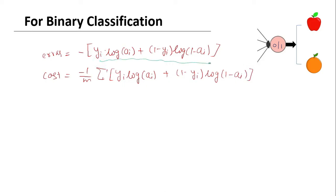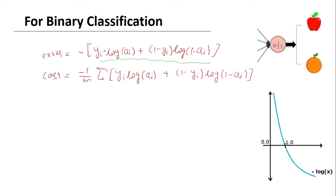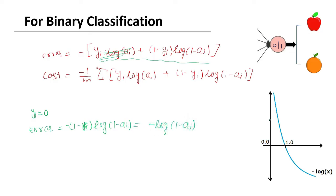Let's look at how this term can represent the error for one observation. The graph of the negative logarithm looks something like this. When the output label yi equals 0, the first term is cancelled, and we are only left with minus of log(1 minus ai). If ai approaches 0, then 1 minus ai approaches 1, and the log value is around 0, so the error is close to 0. When ai approaches 1, then 1 minus ai approaches 0 and the value of minus log becomes very high, so we have high error.